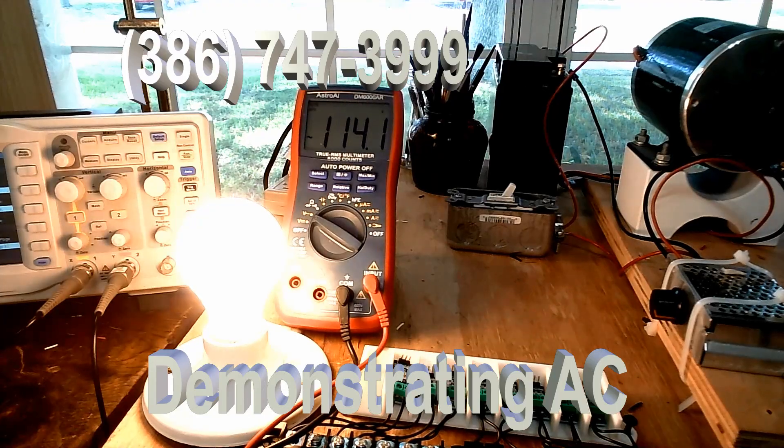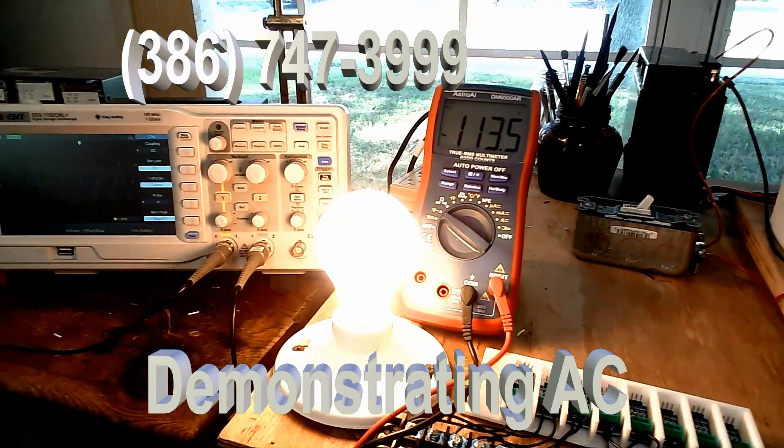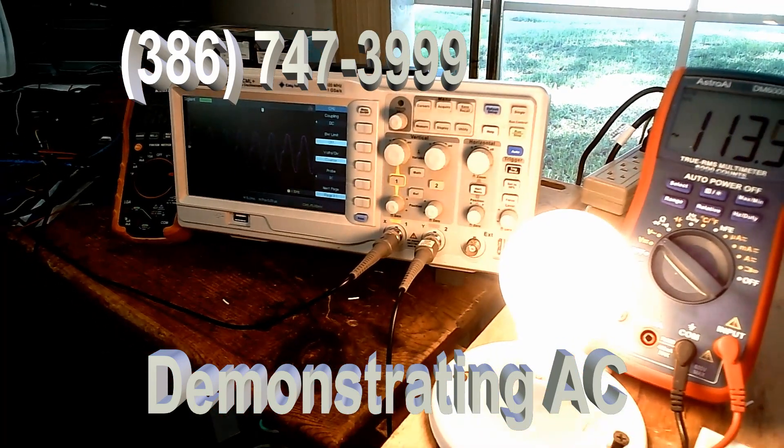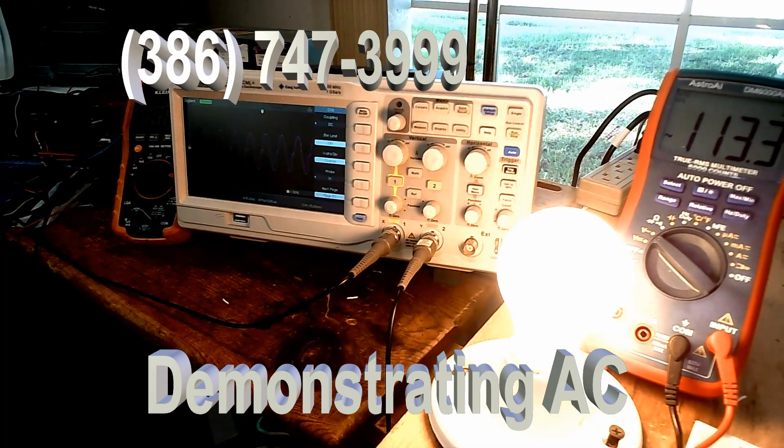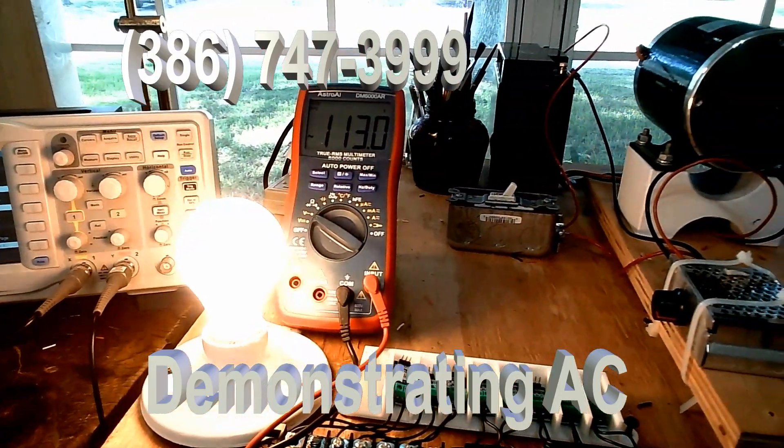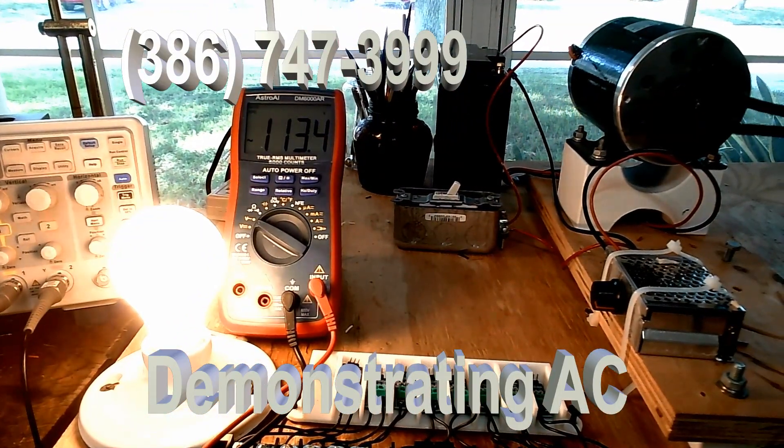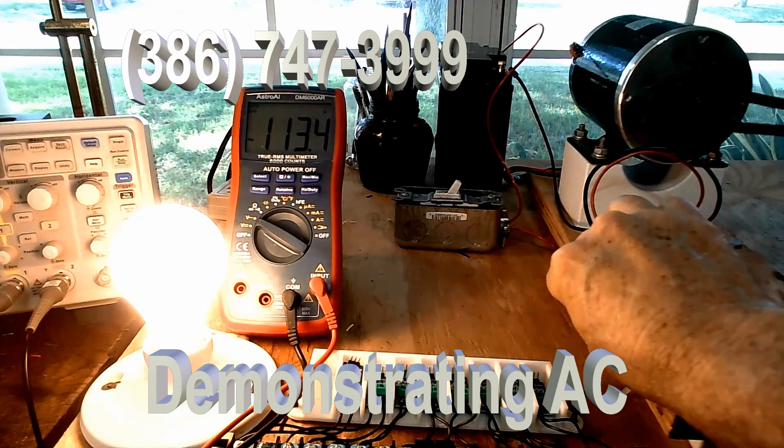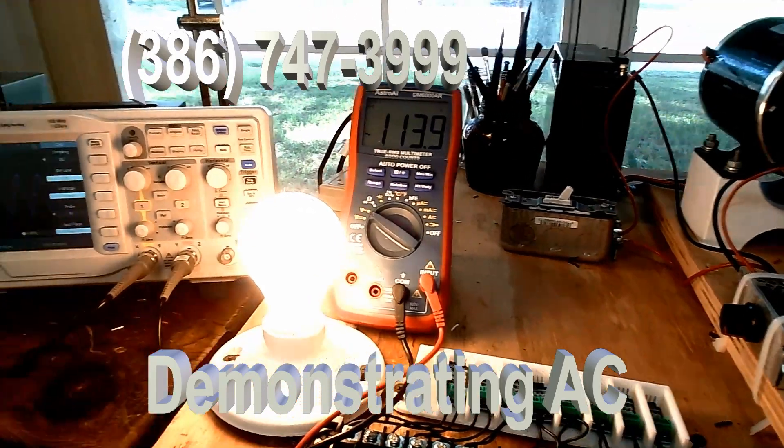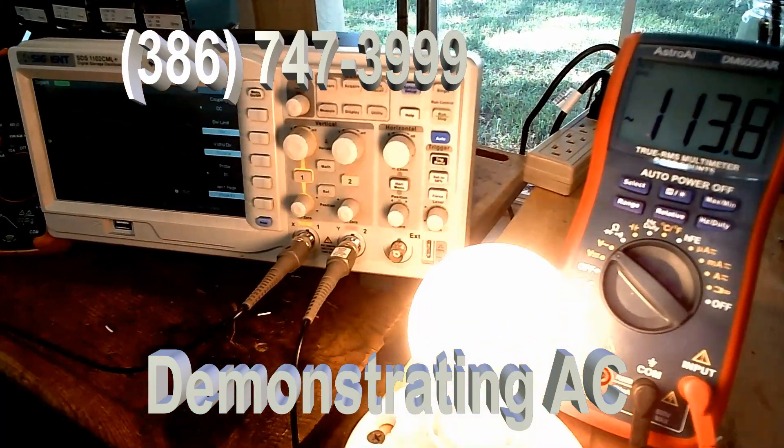Now there's the light bulb, it's all lit, and there is the AC signal. Now we're running 113 volts AC. I can speed it up to 114 rather, and there's the AC.